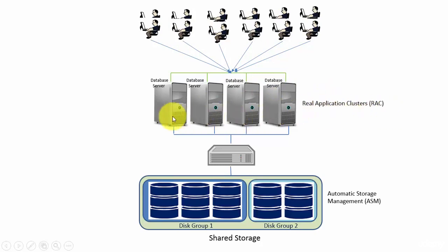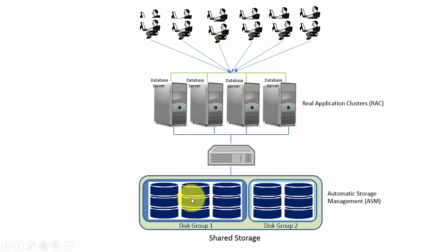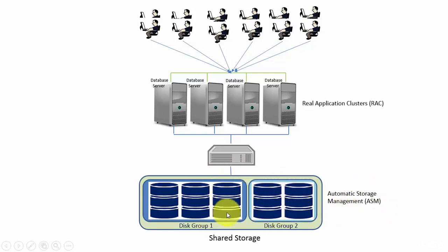By having multiple database servers, we can avoid failure and distribute the load. But what if the disks fail? They said, why don't we replicate the data into multiple disks? And they came up with the concept of Automatic Storage Management, referred to as ASM. In the ASM model, the data in the files is stored in disk groups and evenly distributed to provide uniform performance across the disks.